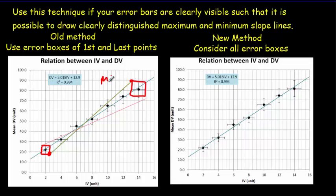And then you do the same thing from that top left corner of the first box to this bottom right corner of the last box, and that would give you your minimum slope line, and then you could use those to figure out your uncertainty in the slope.